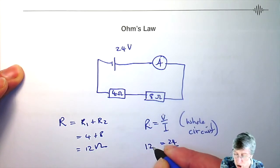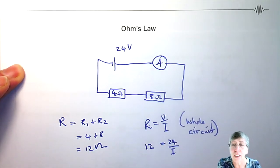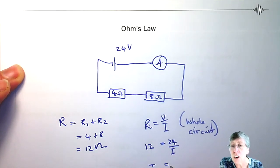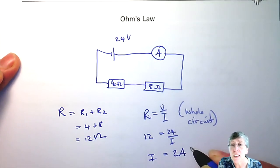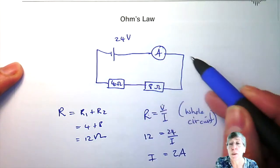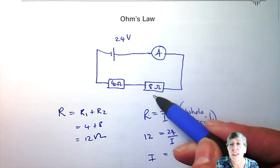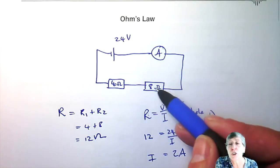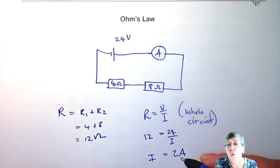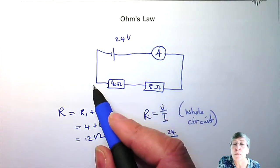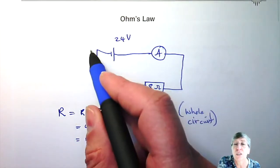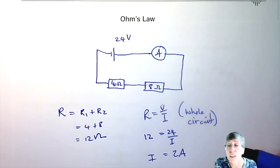So using Ohm's law with 24 volts and 12 ohms gives a current of 2 amperes, which is the reading anywhere in that series circuit. Because in series, if there are 2 coulombs per second travelling here, there are 2 coulombs per second travelling everywhere — there is nowhere to get in or out of the circuit.